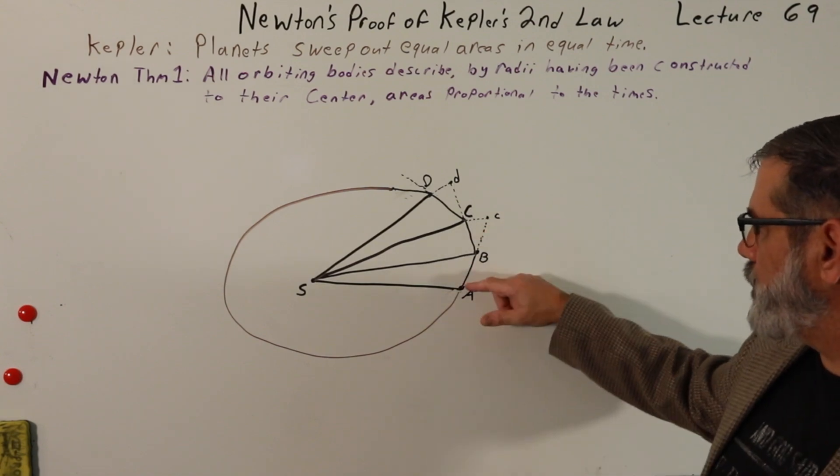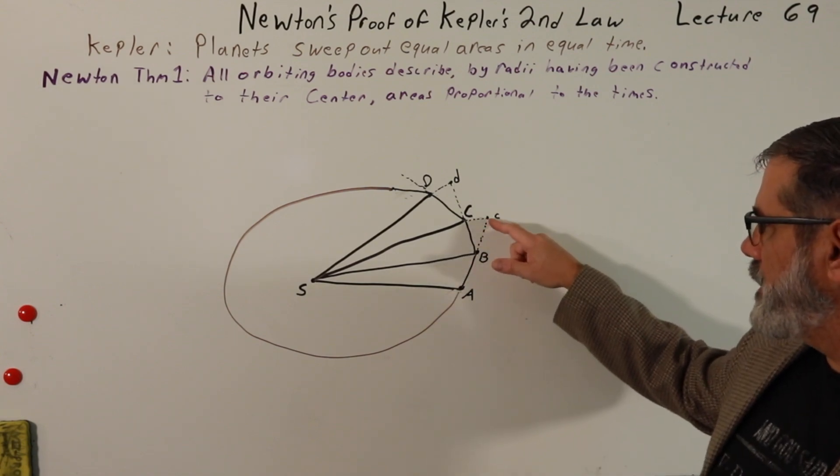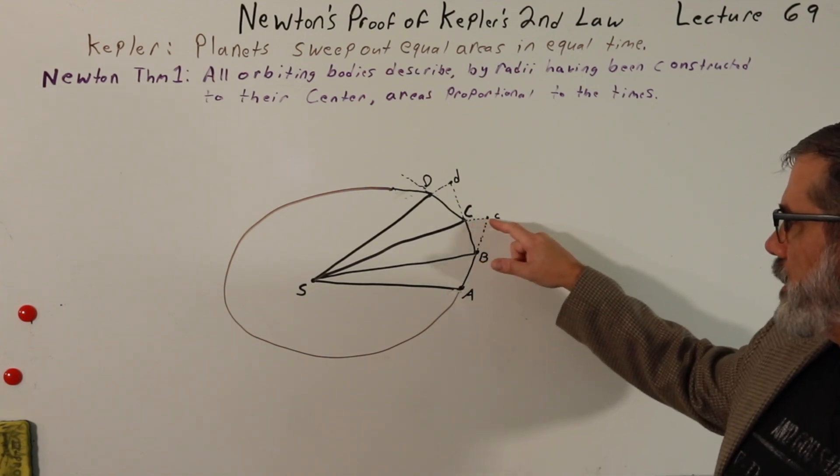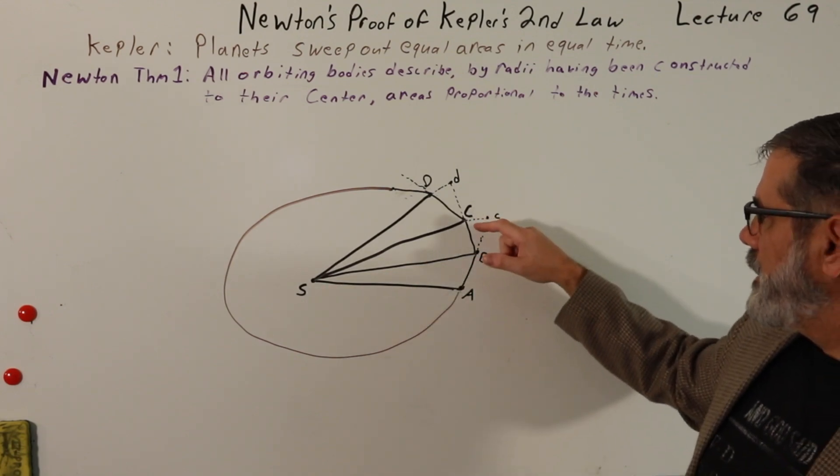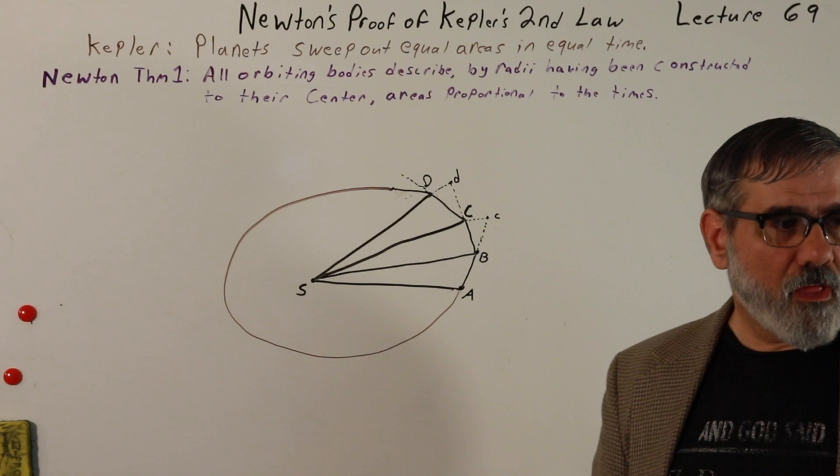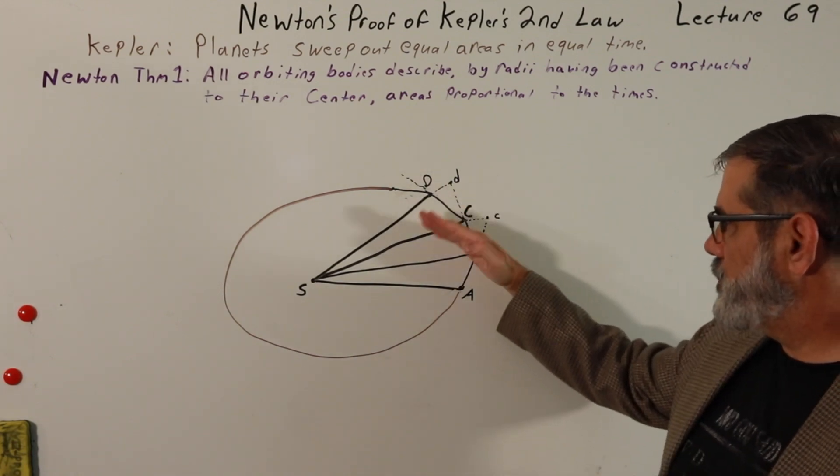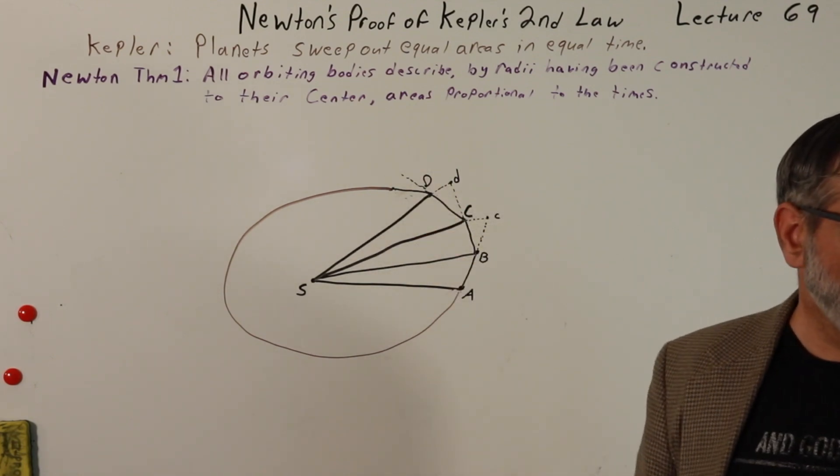So there's no force. If there were no force acting, this is where it would wind up. This line, uppercase C, lowercase c, is parallel to the line SB. And then at point C, it again receives another impulse, which causes it to turn yet again. It changes direction and heads towards this new point, uppercase D.